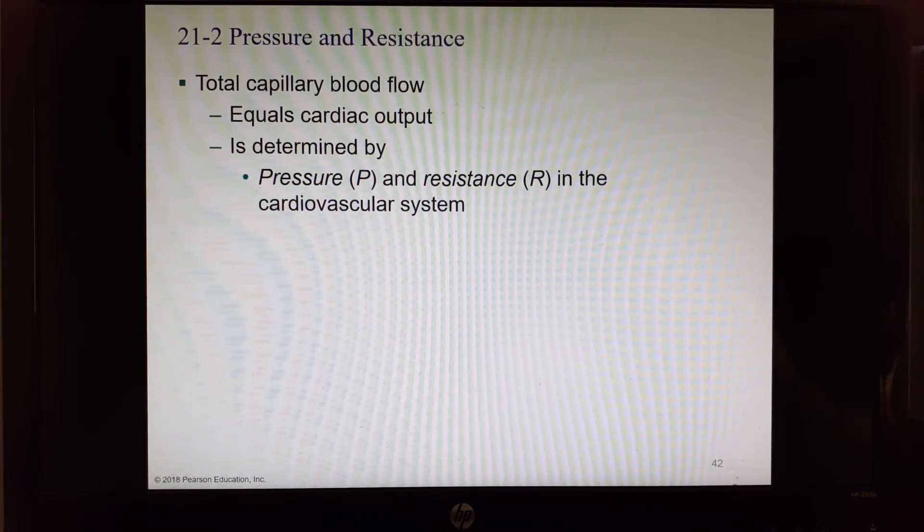We're going to start talking about some formulas. Total capillary blood flow equals your cardiac output. So what does that mean? The amount going through your capillaries has to equal the amount that left your heart. That was cardiac output. And it is determined by the pressure of the blood and resistance in the system.